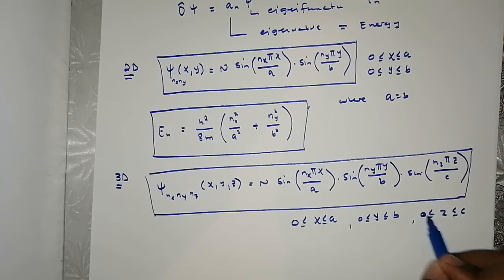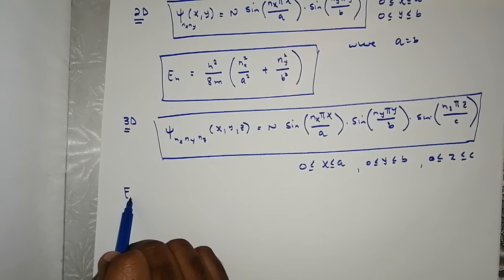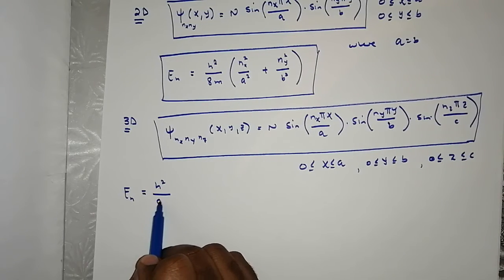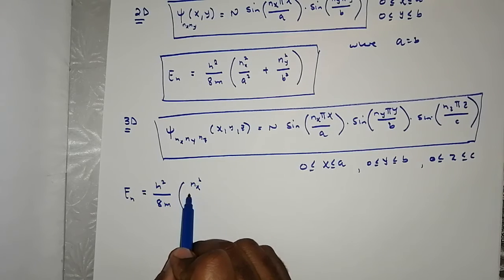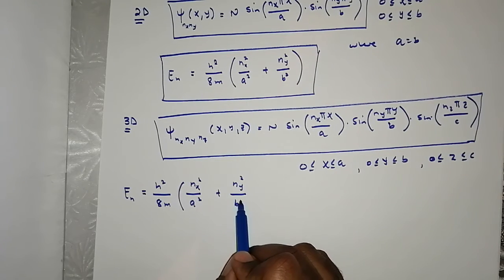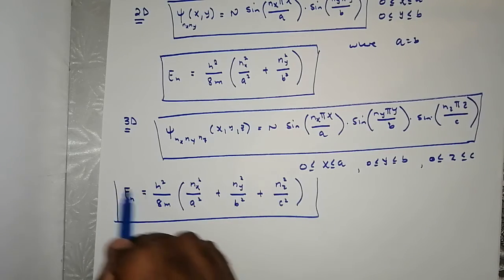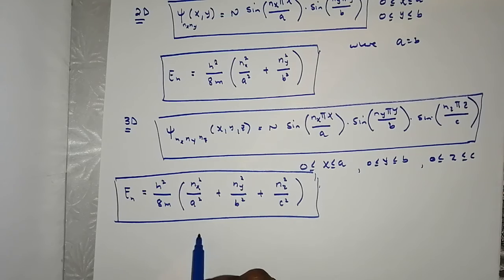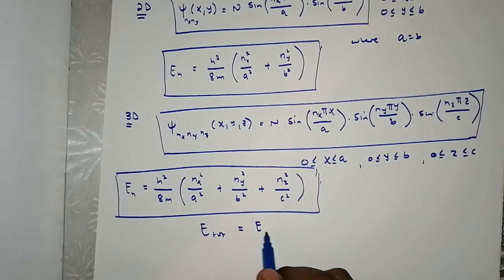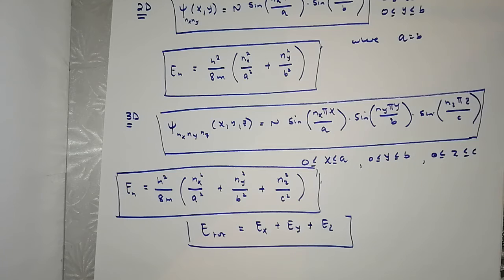The corresponding energy in 3D is h²/8m · (nₓ²/a² + n_y²/b² + n_z²/c²). As can be seen, the total energy E_total can be derived using separation of variables as E_x + E_y + E_z.